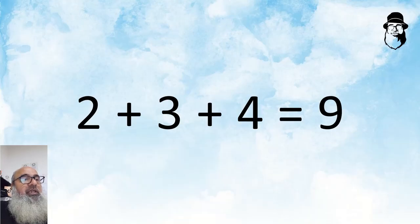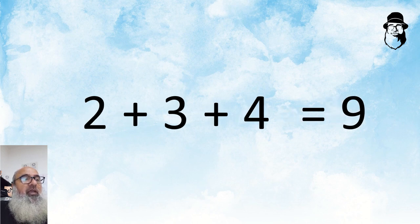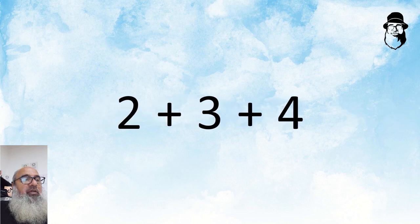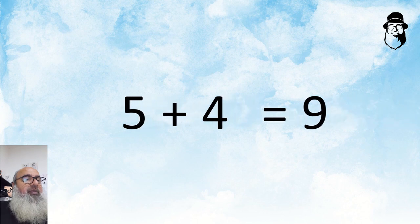Sometimes we have to add 3 or more numbers. For example, 2 plus 3 plus 4 is equal to 9. We can add 2 and 3 to get 5 and then add 4 to get 9.